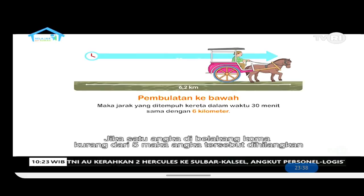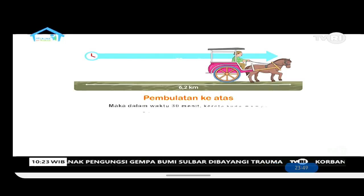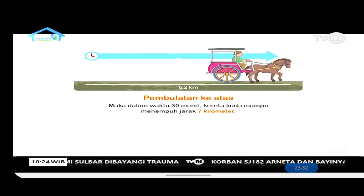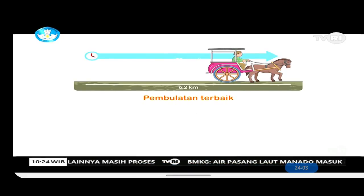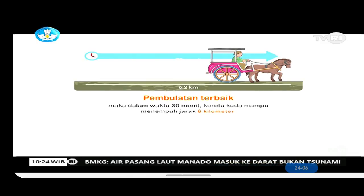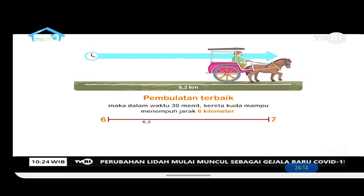Jika menggunakan pembulatan ke bawah, maka jarak yang ditempuh kereta dalam waktu 30 menit akan sama dengan 6 km. Jika satu angka di belakang koma kurang dari 5, maka angka tersebut dihilangkan sehingga 6,2 menjadi 6. Tapi jika menggunakan pembulatan ke atas, maka dalam waktu 30 menit kereta kuda mampu menempuh jarak 7 km. Dari pembulatan itu dapat dilihat bahwa jika menggunakan pembulatan terbaik, maka dalam waktu 30 menit kereta kuda mampu menempuh jarak 6 km karena posisi 6,2 lebih mendekati 6 daripada 7, atau angka di belakang koma yaitu 2 lebih kecil dari 5.